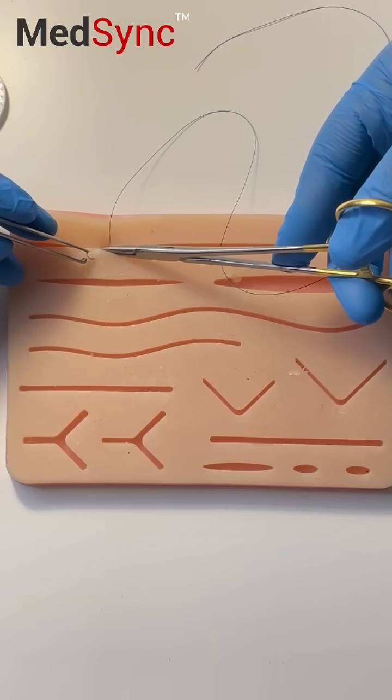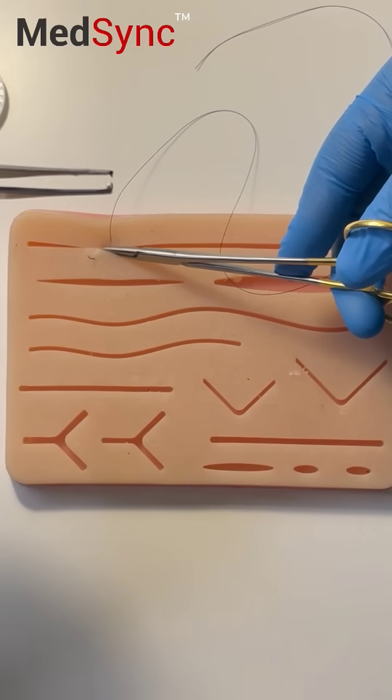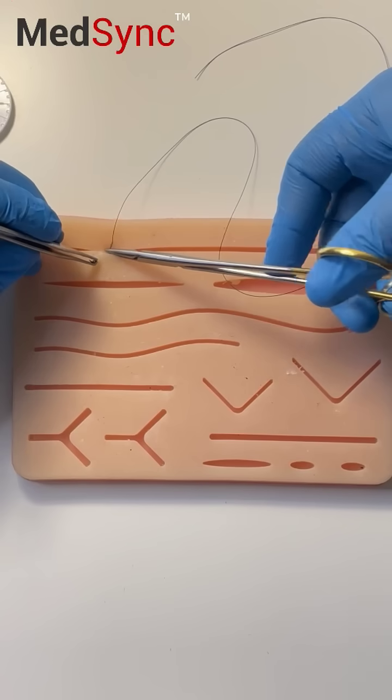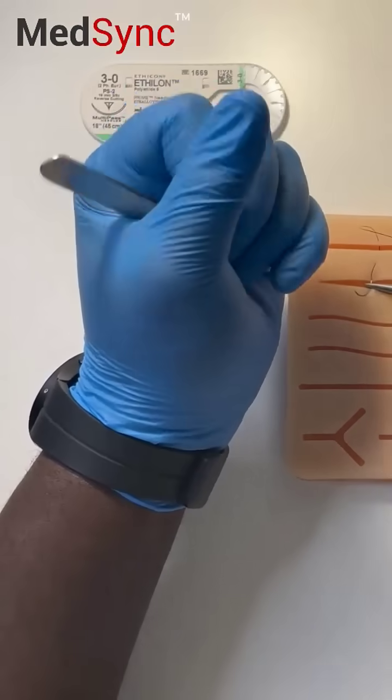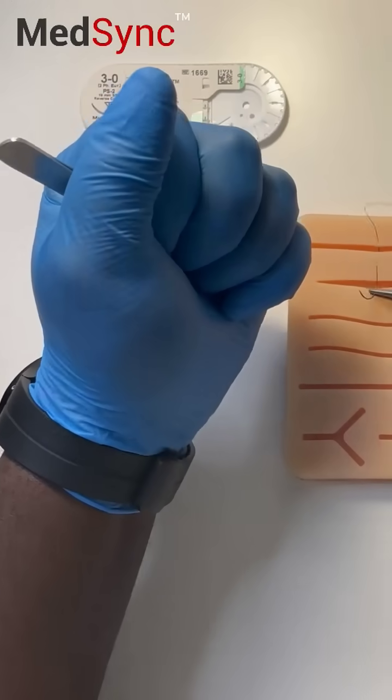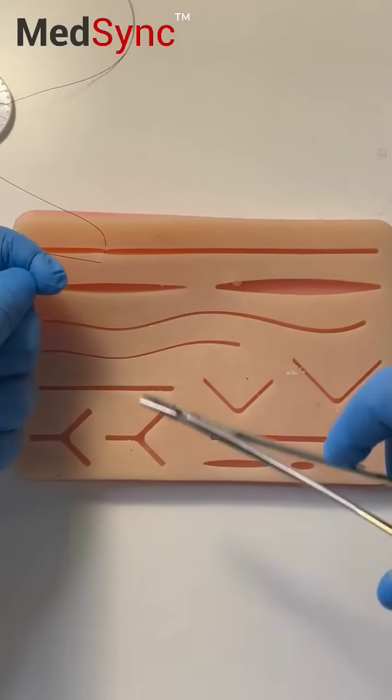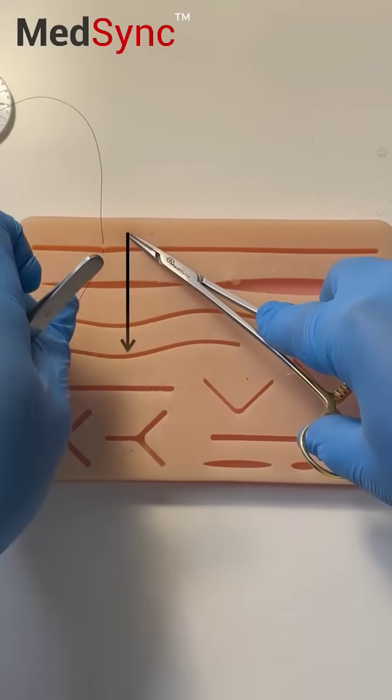Mount the needle between the teeth of the forceps. Mount it straight away and palm your forceps right here. Don't put them down. You grab the suture and you pull it in one hand.